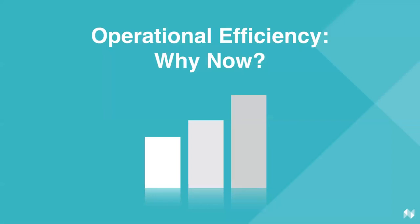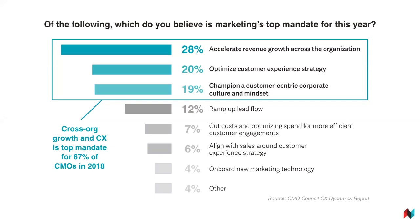But why is it so important? I want to look at some statistics that help make it clearer as to why we're talking about this right now. This slide shows a breakdown from the CMO Group of what CMOs believe to be the top mandate for marketing organisations this year. As you can see from the data, 67% of CMOs believe that the ability to drive real, true cross-organisational growth and improve customer centricity is of absolutely paramount importance this year — and integrated marketing is the vehicle that will allow them to drive that.